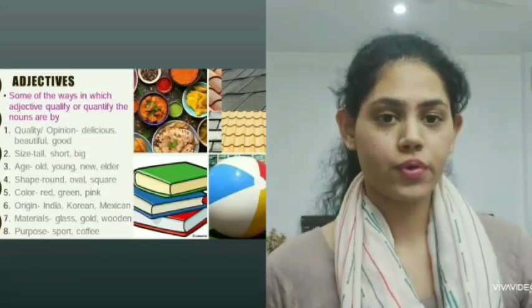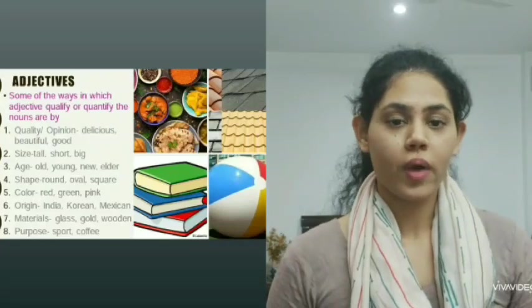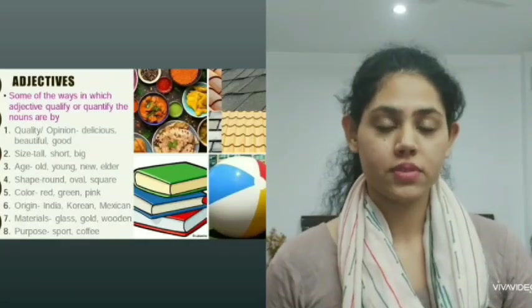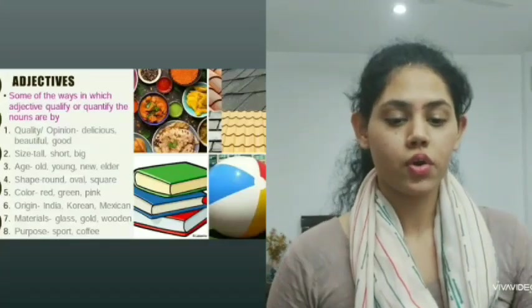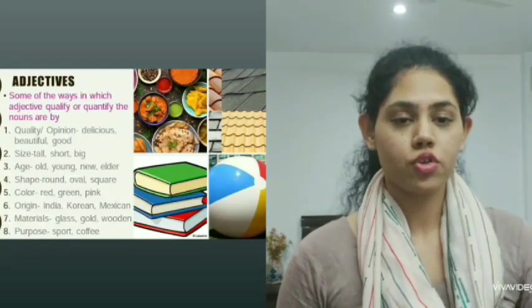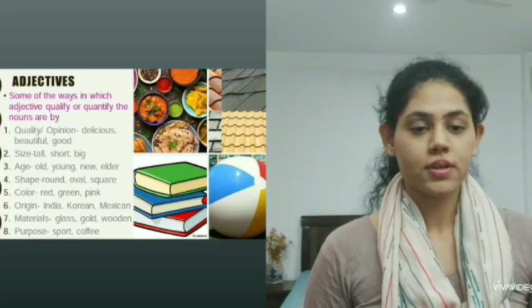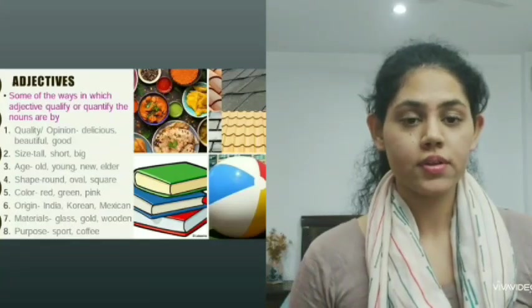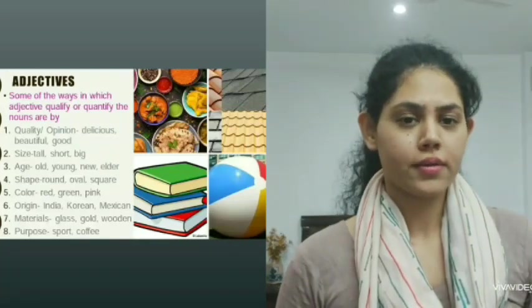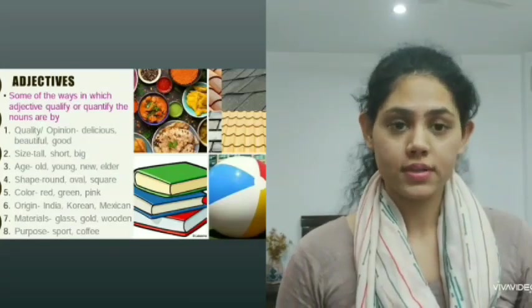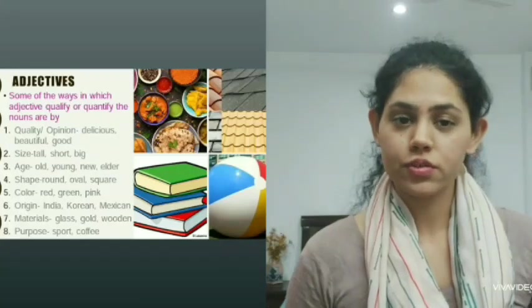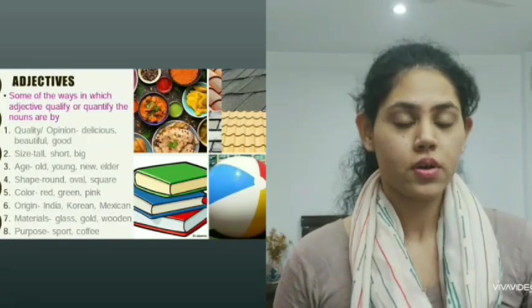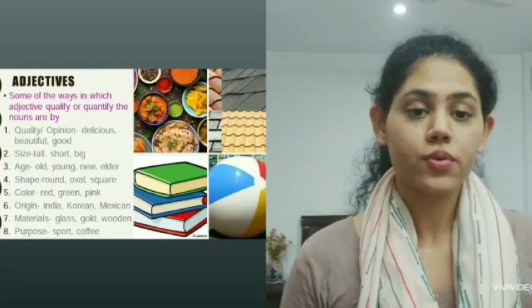There are certain ways in which an adjective quantifies, describes, or tells us about a noun in a sentence. The first is quality or opinion — for example, delicious, beautiful, good. For size, we could say tall, short, big. For age, we could use old, young, new, elder. For shape: round, oval, square. For color: red, pink, green, or any other color. Origin: Indian, Korean, Mexican. Materials could be gold, wooden, glass. Purpose could be, for example, sport or coffee. These were a few examples in which you could use an adjective.